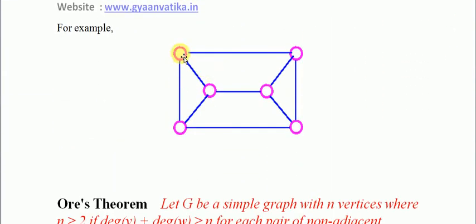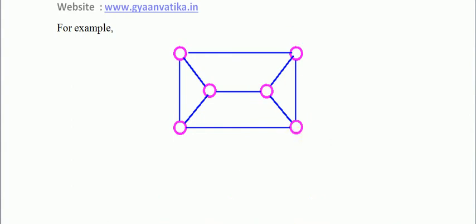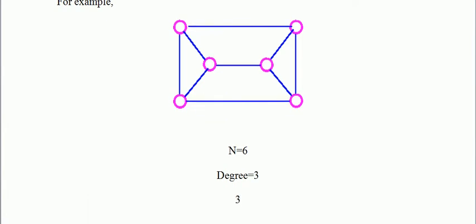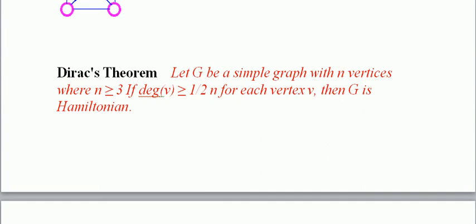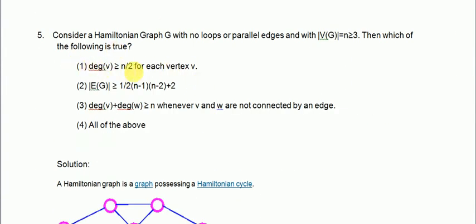We have to see if degree of each vertex is greater than or equals to N/2. The number of vertices is 1, 2, 3, 4, 5, 6, so N = 6. Half of N is 3, and 3 ≥ 3, so this condition is true. Therefore, the given graph is Hamiltonian, as stated by the Dirac theorem. So option number 1 is correct.